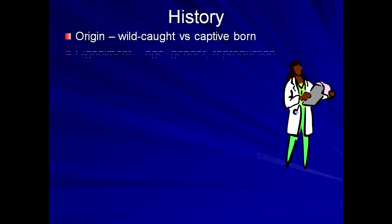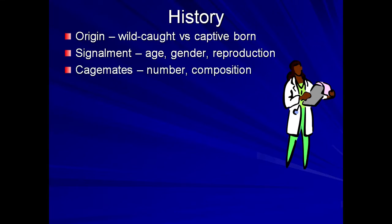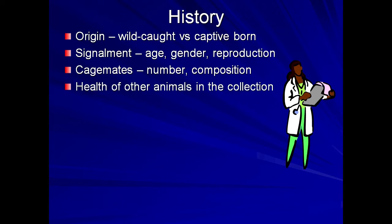Captive-born animals may be more prone to chronic or metabolic conditions such as metabolic bone disease. The age, gender, and reproductive activity should be noted. The number and composition of cage mates is critical, as it may indicate social or other stressors in the environment. The health of the other animals in the collection may help determine the extent of the problem, or help select between rule-outs that affect individuals versus groups.